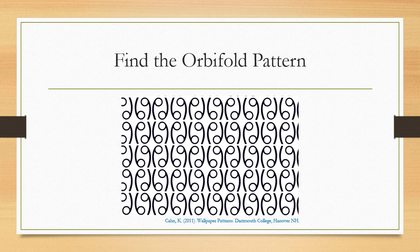In the following few examples, I'd like you to find the orbifold pattern. I'll give you a few seconds to make your answers, and then we'll go over each. In this first pattern, it's a reflection pattern — reflecting in two ways: reflecting down and reflecting across.